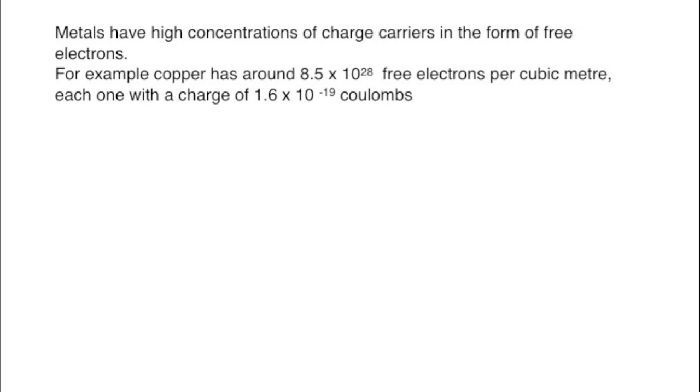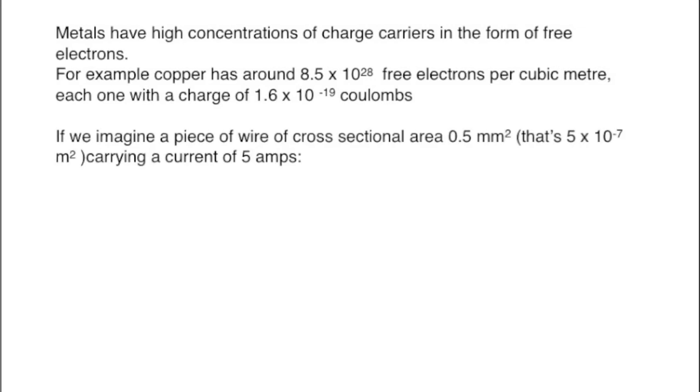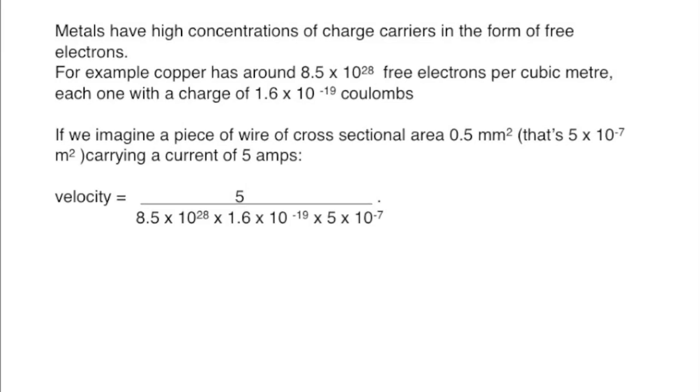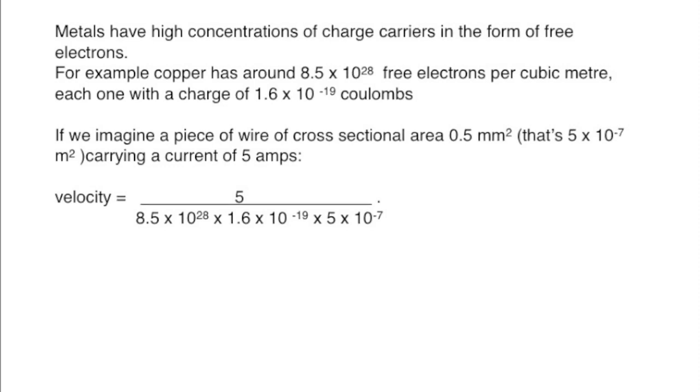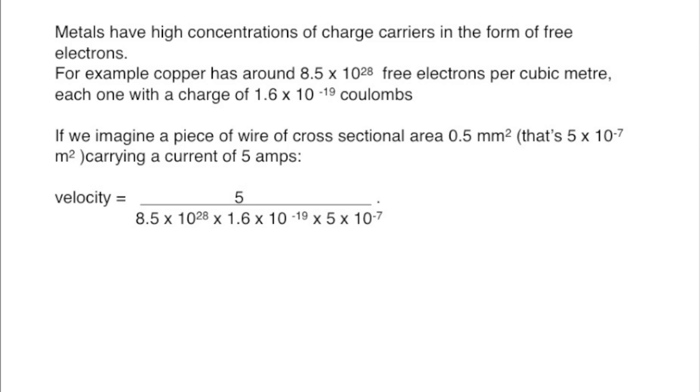But if we continue with copper with an example of a piece of wire which is 0.5 mm² in cross sectional area and carrying a current of 5 amps. Using our equation, the velocity of the electrons will be the current divided by the number of free electrons per cubic meter multiplied by the charge on each of those multiplied by the cross sectional area of the wire.